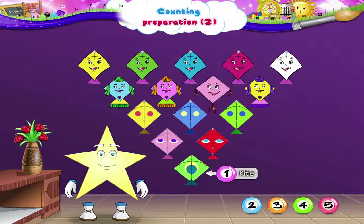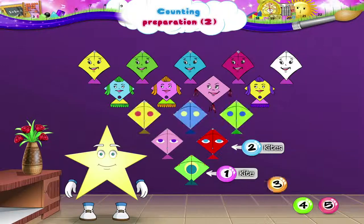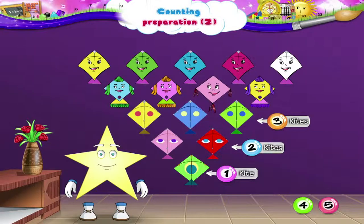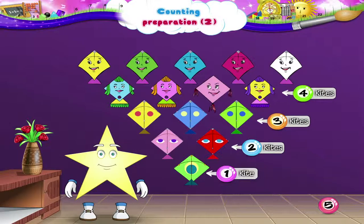1, 2, these are 2 kites. 1, 2, 3, these are 3 kites. 1, 2, 3, 4, these are 4 kites.